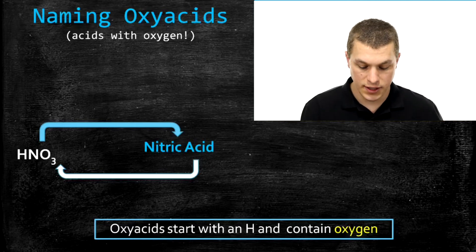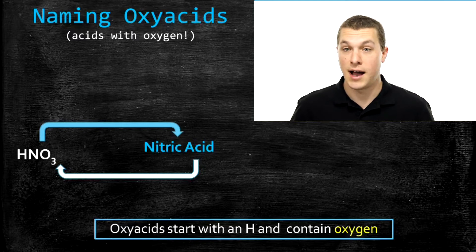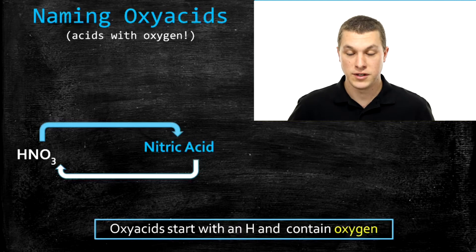Usually this oxygen is in a polyatomic ion. Like in this case we can see that we have HNO3, and that polyatomic ion is nitrate, and it has the oxygen in it. So it's really important that you know your polyatomic ions to be able to go through these naming rules.